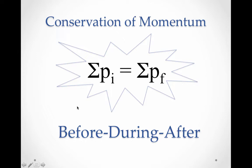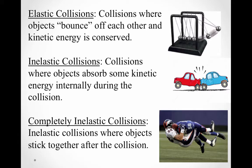Before we get to the different examples of collisions, we need to know a little bit about the different types. In our previous video, we saw a bit about conservation of momentum and explosions. Now we want to look at a different kind of interaction, where objects are apart and then come together and interact in something called a collision. There are three types of collisions that we typically talk about.